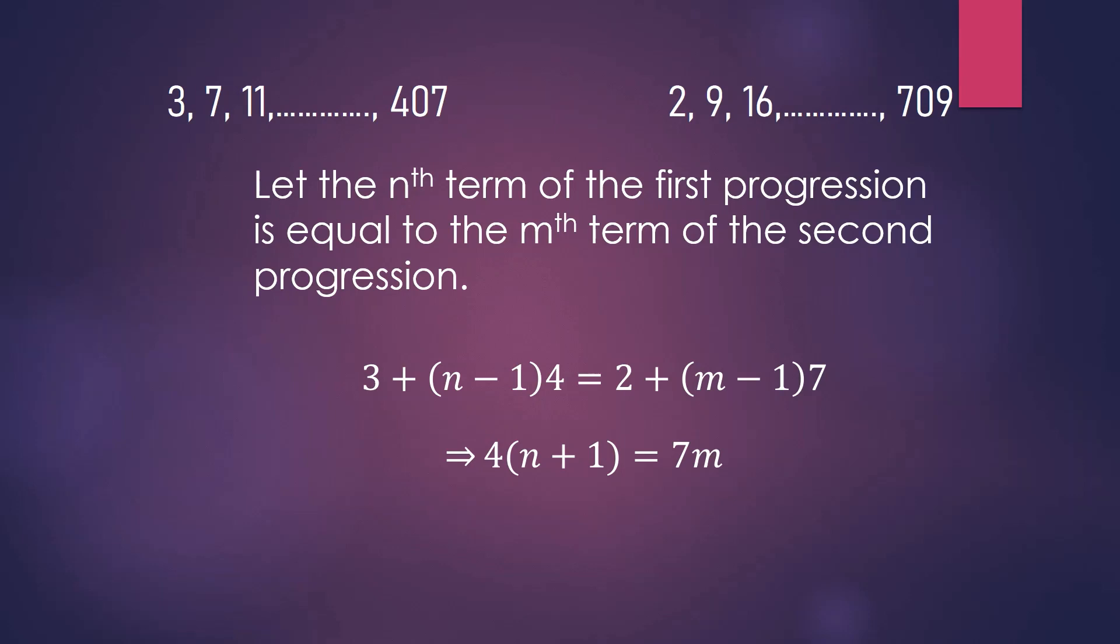Now, we have to find all possible solutions for N and M, such that the above equation is satisfied and none of N or M exceeds 102, since the total number of terms in both the progressions is 102. Now with simple observation, we see that if N is 7 or N is 6, and M is 4, the equation is satisfied, along with the restrictions of N and M. So the sixth term of the first progression is same as the fourth term of the second progression.